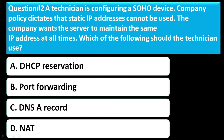Question number two: A technician is configuring a SOHO device. Company policy dictates that static IP addresses cannot be used, but the company wants the server to maintain the same IP address at all times. Which of the following should the technician use? Option A is a DHCP reservation. Option B is port forwarding. Option C is a DNS A record. Option D is NAT.